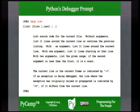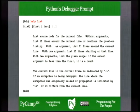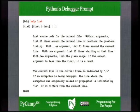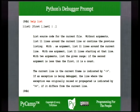There is a 'list' command that will show you the source code for the program under debugging — that's your fizzbuzz.py script. It can take optional arguments: you can tell it what line to list from and the last line to list, or give it a dot to list around where the current instruction pointer is. The help information shows the list command can be abbreviated as 'L'.